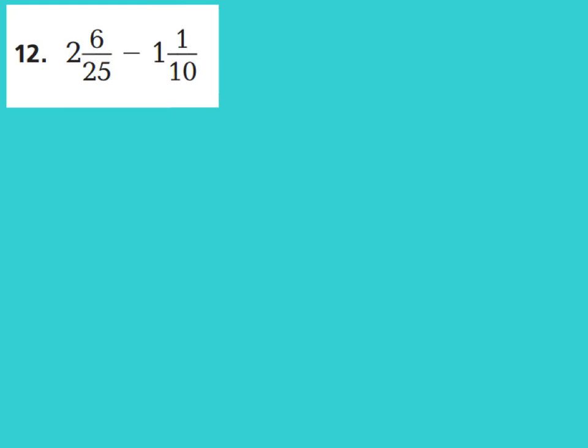Alright, I hope you're really understanding this and starting to get the hang of this. Let's go ahead and look at question number 12. We're going to start out with 2 and 6 25ths. And we're going to subtract 1 and 1 10th. Now let's take a look at our denominators. We have 25 and 10. If we list our multiples of 10, we'll have 10, 20, 30, 40, 50. And if I list my multiples of 25, I'd have 25, 50. So my least common denominator shows up as 50. So let's go ahead and make our denominator as 50.